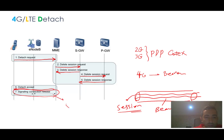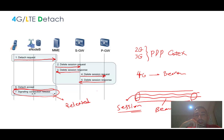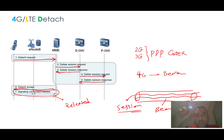This was an introductory overview of two basic scenarios in the LTE network: Attach and Detach. In the next episode, I will go through the details in a real scenario using Wireshark, in pcap format, and we will go step by step through the message details. Thanks for watching this video, and I hope to see you again in the next one. Bye!